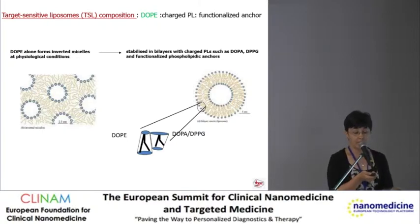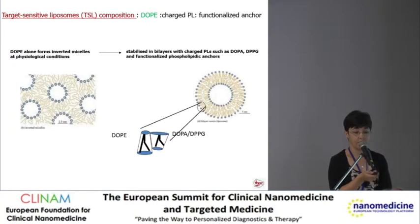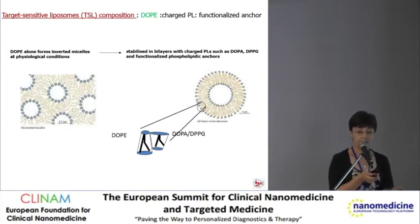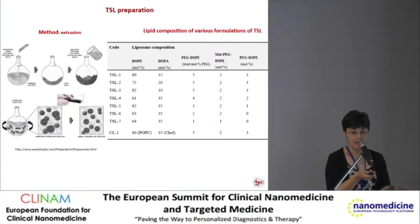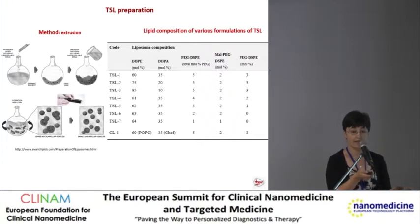Target-sensitive liposomes (TSL) have a balanced lipid composition mixing DOPE (dioleoyl-phosphatidylethanolamine), a phospholipid that alone cannot form bilayers and instead forms inverted micelles. This DOPE is stabilized in the bilayers by charged phospholipids such as DOPA (dioleoyl-phosphatidic acid), and a lipid N-core used to couple the homing devices. We optimized the TSL lipid composition to balance target stability, target recognition, and liposome stability, also determining the optimal PEG concentration in the bilayers.